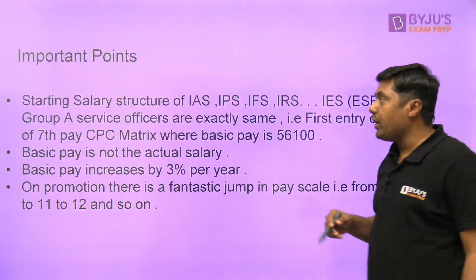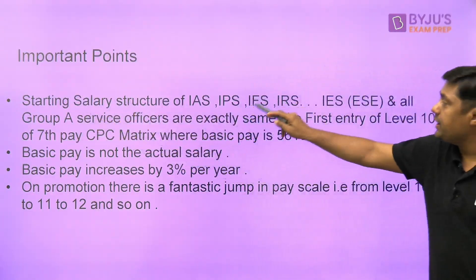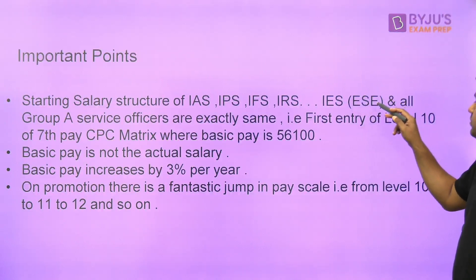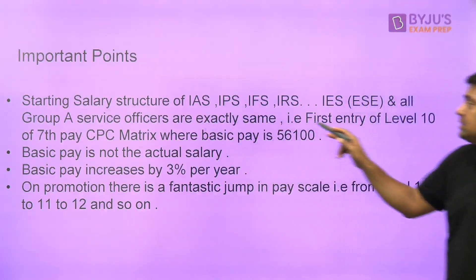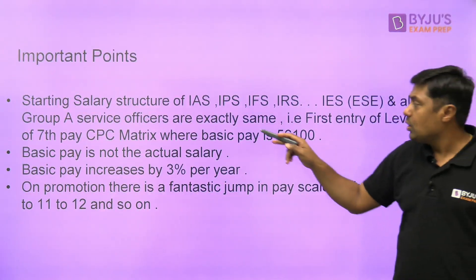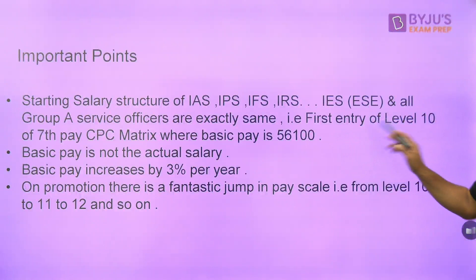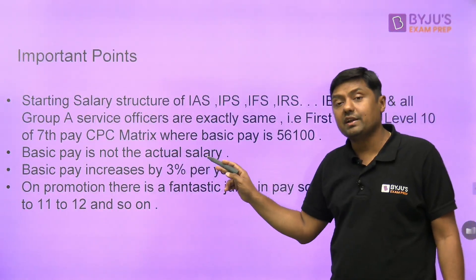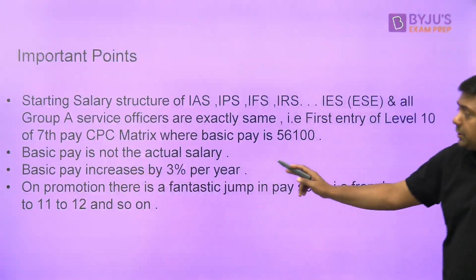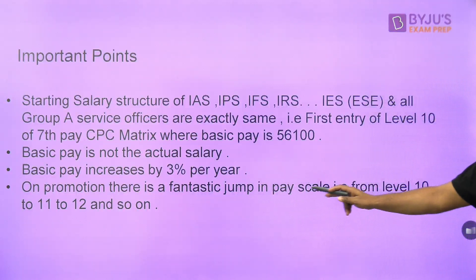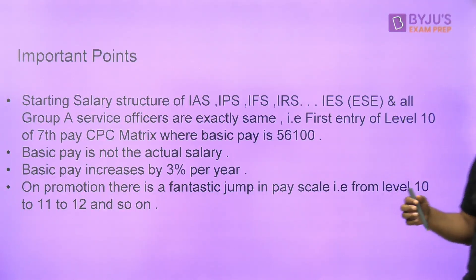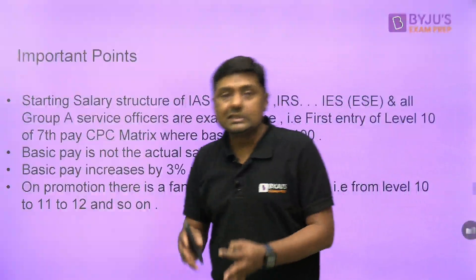These are the important points: the starting salary structure of IAS, IPS, IFS, IRS, and IES — that is through the Engineering Services Exam — and all Group A service officers are exactly the same, with entry at Level 10 of the pay matrix where basic pay is 56,100. Basic pay is not the actual salary. Basic pay increases by 3% per year. On promotion, there is a fantastic jump in pay scale from Level 10 to Level 11 to 12, and from 12 to 13.